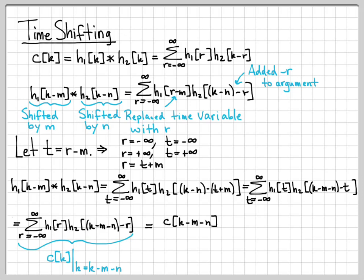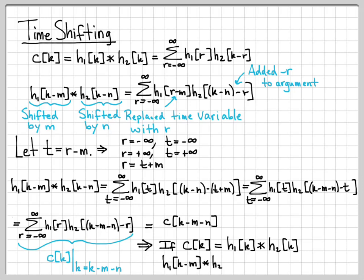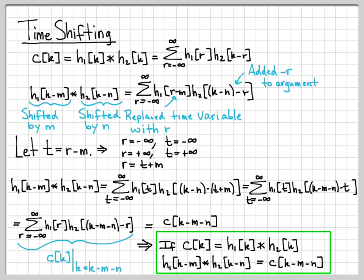What we have is our original signal c, but with k replaced by k minus m minus n. So if c of k equals h1 convolved with h2, and we shift h1 by m and h2 by n, the result is the original signal shifted by m plus n, their sum. We have just shown the time-shifting property of discrete time convolution.